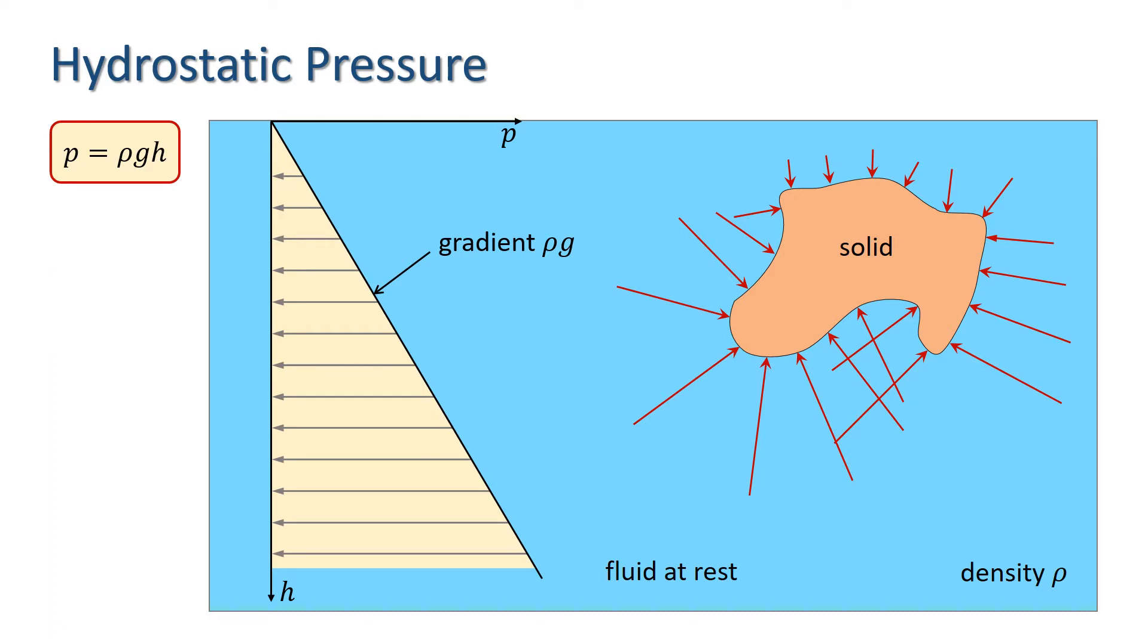Here, the grey arrows represent the magnitude of the pressure at different depths. This linear distribution, often represented as a pressure diagram as shown here, is the basis for calculating the hydraulic thrust on submerged surfaces.